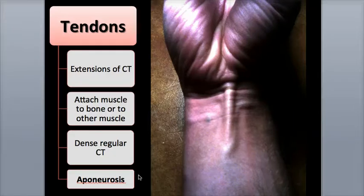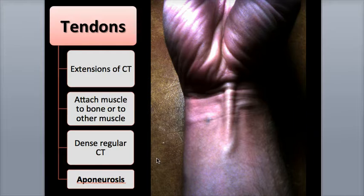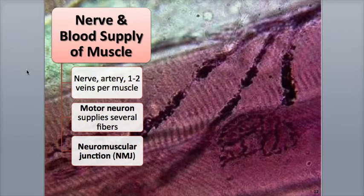Other tendons, called aponeuroses, have a shape that is more flat and sheet-like, such as the epicranial or scalp aponeurosis on the top of your skull, and the plantar aponeurosis located on the bottom of your foot. Because of their high demand for oxygen, energy, and nutrients, skeletal muscles have a generous supply of blood vessels and nerves.